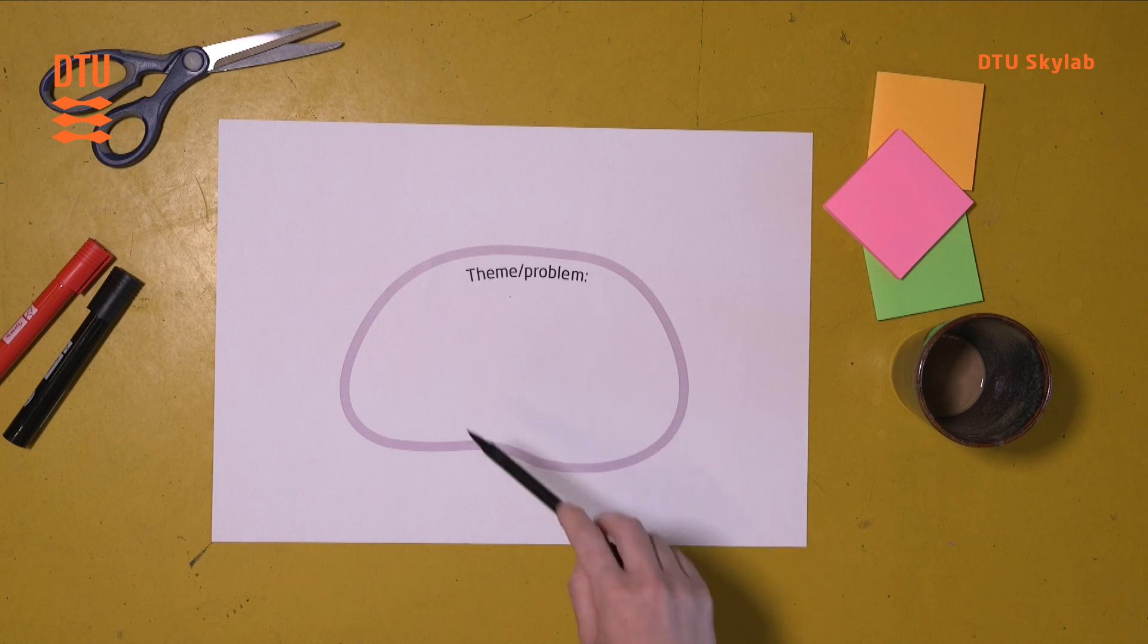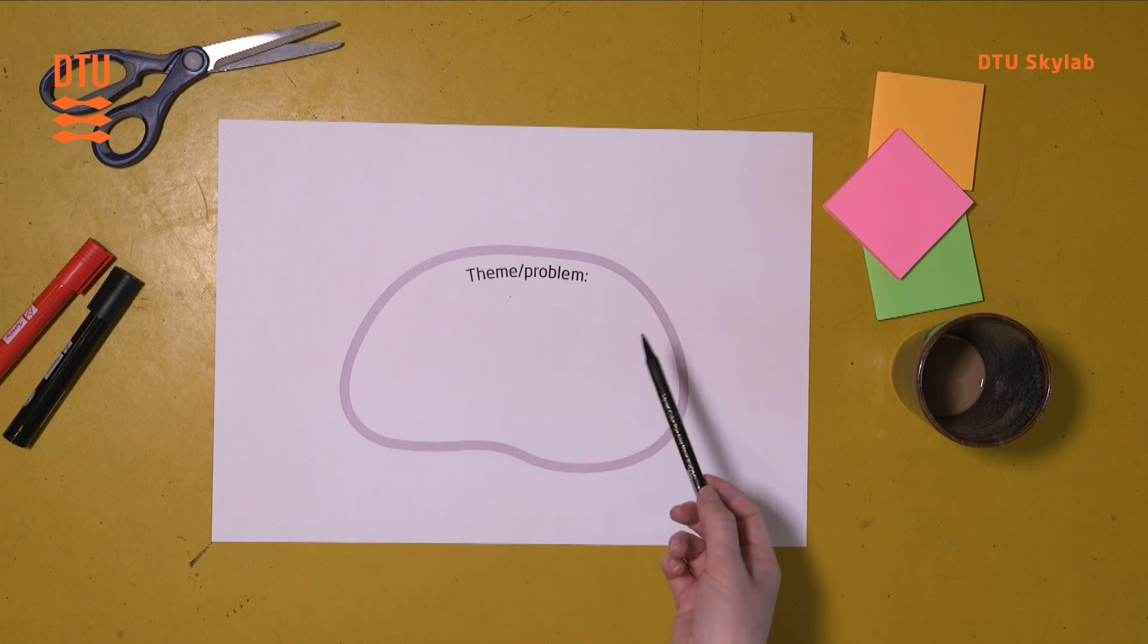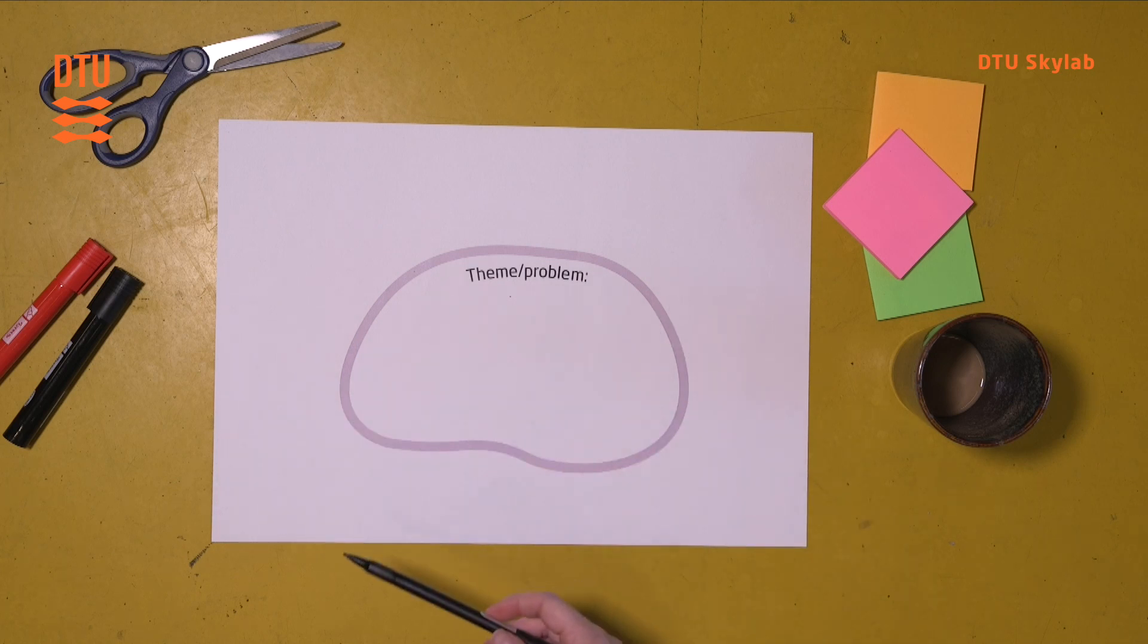Assumption-dumption is a great way to work on a theme and a problem, to challenge your assumptions and to get all biases and concerns out on the table. So it's a really good method to use at the beginning of a process to get the team on the same page and create this shared understanding about a theme or a problem.